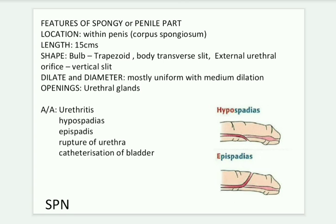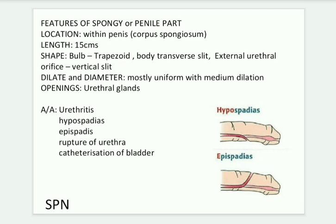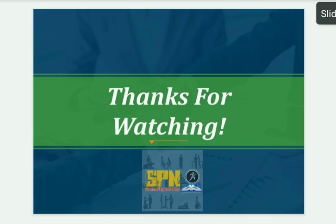Catheterization of the bladder: in some cases the patient is unable to pass urine, so a catheter is inserted into the bladder to pass the urine out. While passing the catheter, one has to remember the normal curvatures of the urethra to allow the nurse or anyone to insert the catheter correctly. Thanks for watching.